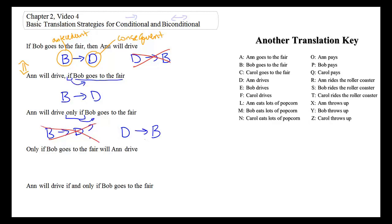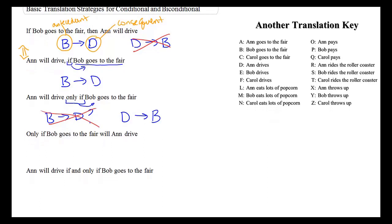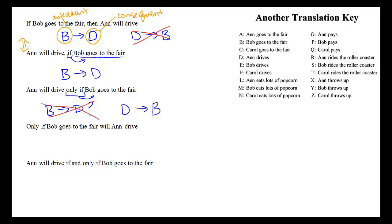The conditional can express both 'if-then' and 'only if.' When we have 'if' by itself, that indicates the antecedent; when we have 'only if' by itself, that indicates the consequent. Applying this rule to the next sentence — even with changed English word order — if 'only if' indicates the consequent, we will again have B after the arrow and D in front. Changing English word order does not change our symbolization.